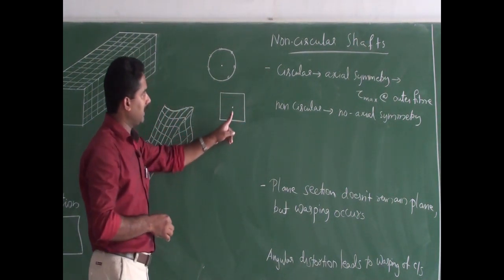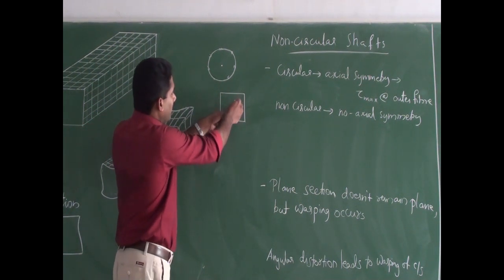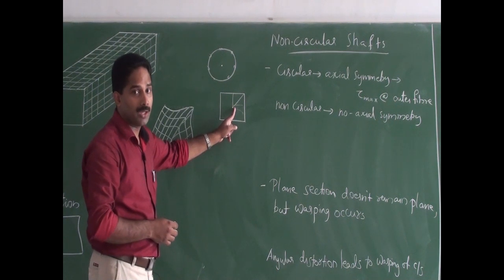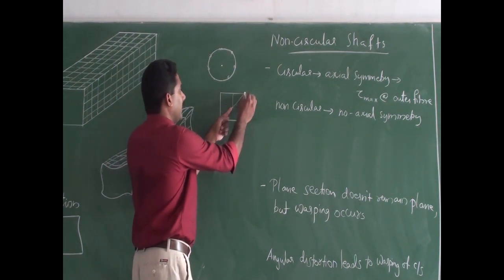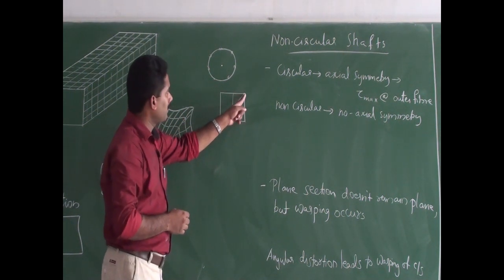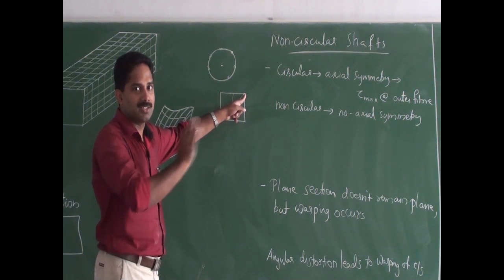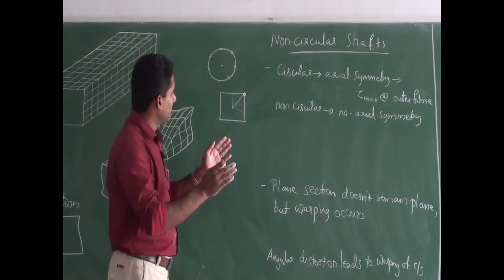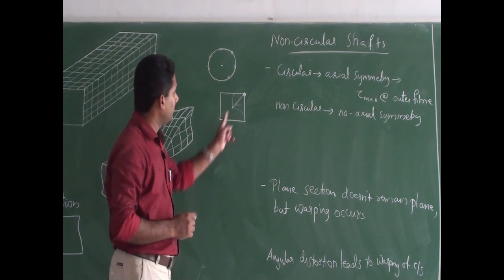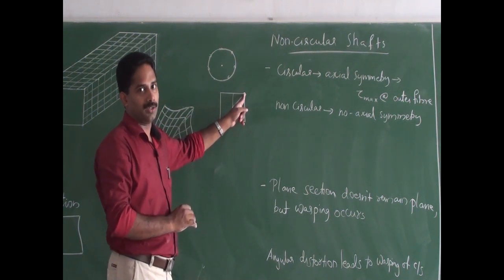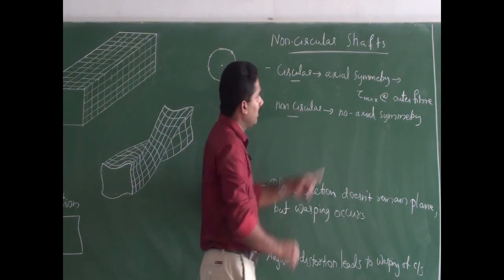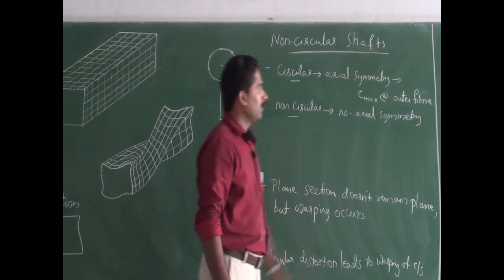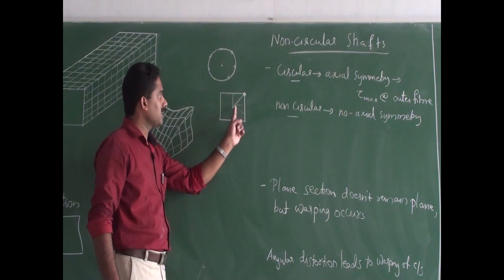For a non-circular shaft — for example a rectangular or square shaft — the cross-section is not symmetric about the central axis. The distance from the center to the outer fiber varies, so there is no axial symmetry. In this case, it can be proved that at the outer fiber (the point of maximum distance), the shear stress is actually zero — and maximum shear stress occurs elsewhere. This is the major difference between circular and non-circular (axially symmetric vs. axially non-symmetric) shafts.